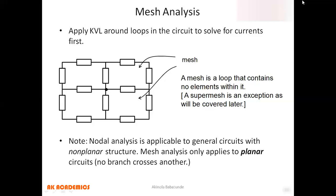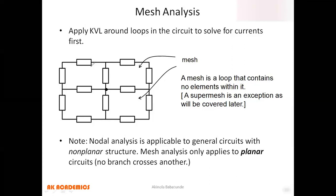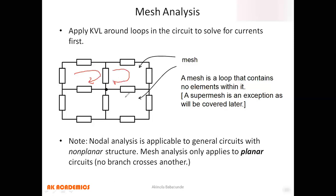For mesh analysis, you apply KVL around loops in the circuit to solve for currents. As you can see, this is a mesh, this is another mesh, this is another mesh — we have one, two, three, four meshes here. A mesh is a loop that contains no other elements within it. A super mesh is an exception, which we will cover as we move on.